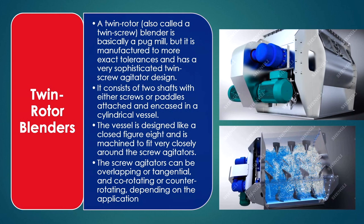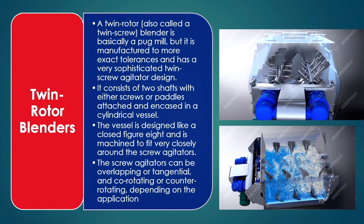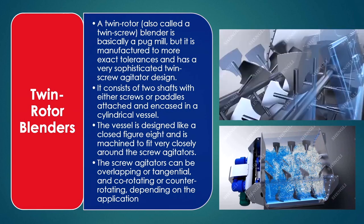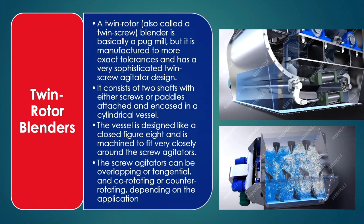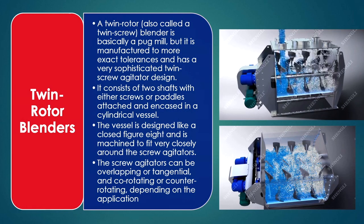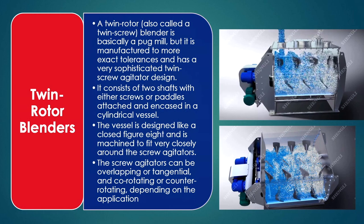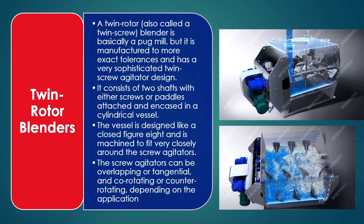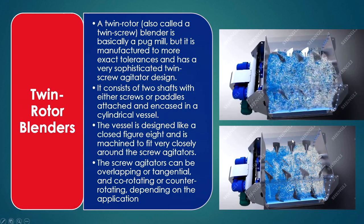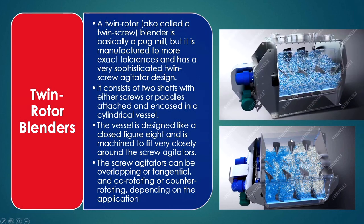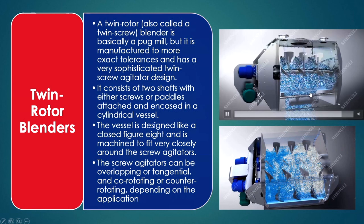The twin rotor blender, also called a twin screw blender, is manufactured to more exact tolerance with a sophisticated twin screw agitator design. It consists of two shafts with either screws or paddles, encased in a cylindrical vessel designed like a closed figure, maintained to fit very closely around the screw agitators. The screw agitators can be overlapping or tangential, and co-rotating or counter-rotating, depending on the application.